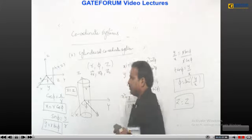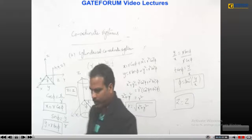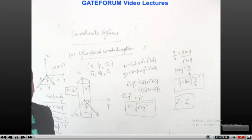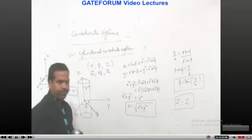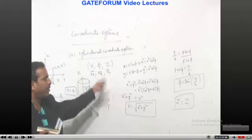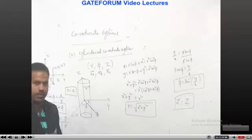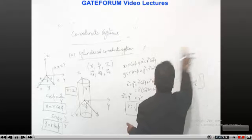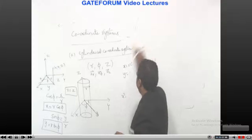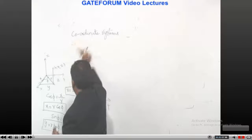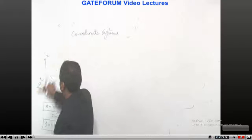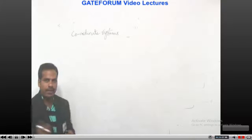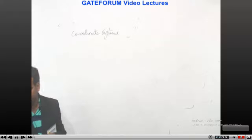This concludes the differential length, surface, and volume elements, and the relationship between Cartesian and cylindrical coordinate systems. Next, we move to our last coordinate system — the spherical coordinate system. Let's take a five-minute break and then come back to the spherical coordinate system.